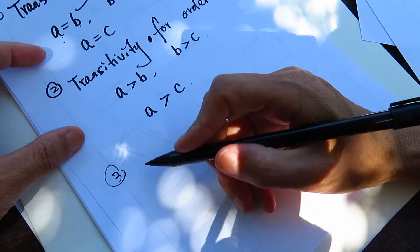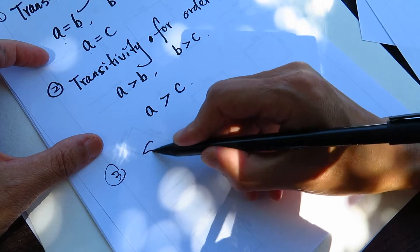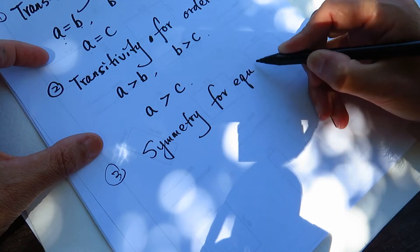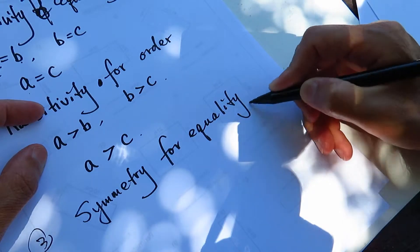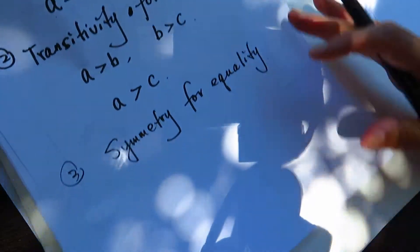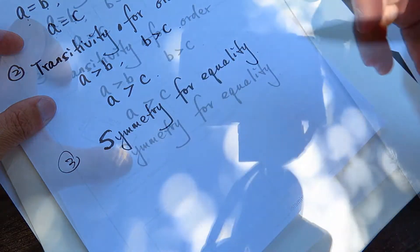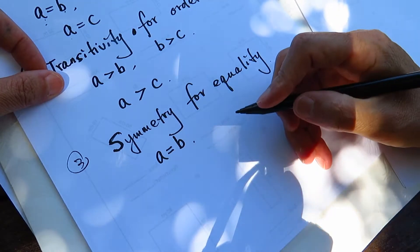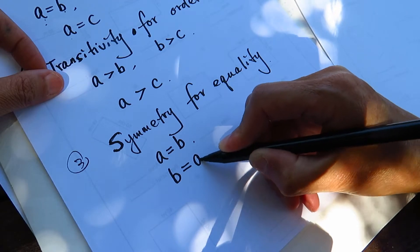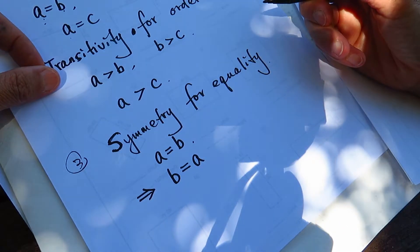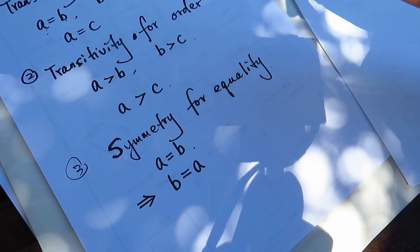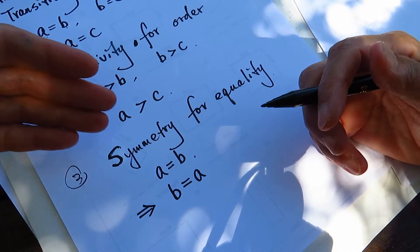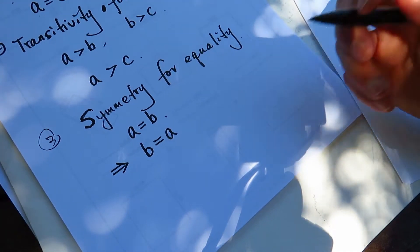The third one is symmetry for equality. If A equals B, then B equals A. Kind of obvious, right? If my age is five, then age five is my age. It's hard to explain — it's just so obvious.